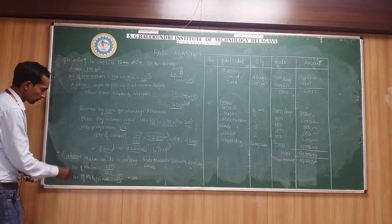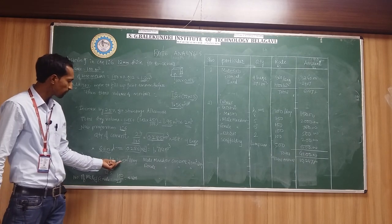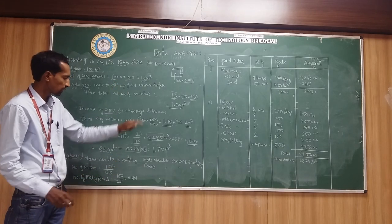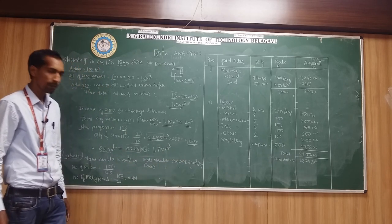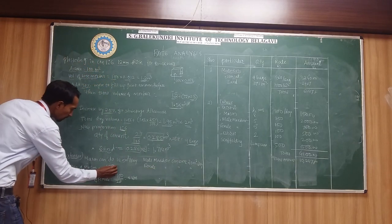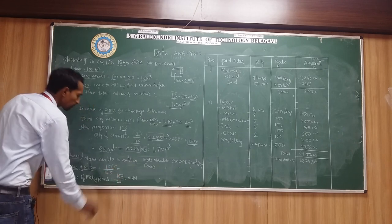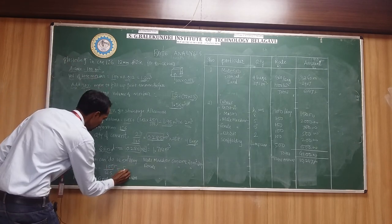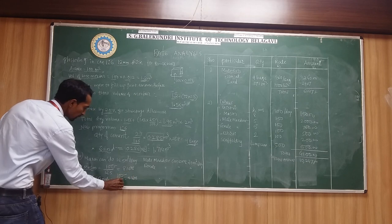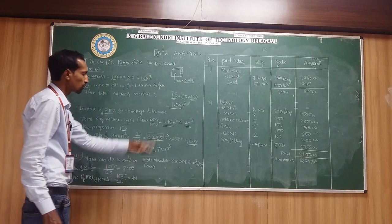Now we calculate the labor. One mason can do 12.5 meter square per day. Male mazdoor can work 20 meter square per day and female mazdoor can also work 20 meter square per day. For 100 meter square, dividing by 12.5 gives 8 masons. For male and female mazdoor, 100 divided by 20 gives 5 numbers each. These numbers will be used in the rate analysis table.